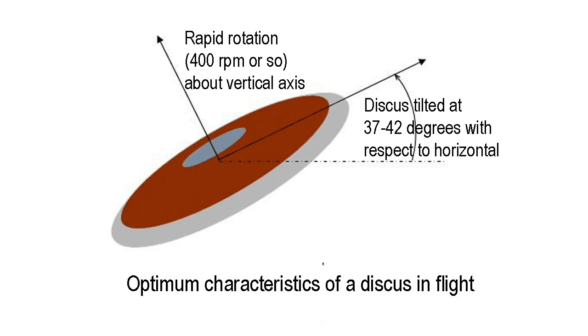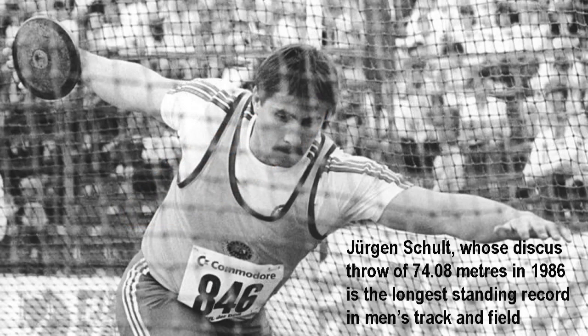To be stable in flight and gain the most possible lift as it flies through the air, the discus has to be tilted on release at an angle of between 37 and 42 degrees. Less than that and it will lose lift; greater and it will stall. Uniquely among track and field events, the discus throw benefits from a headwind. The spinning disc actually travels further on a moderately windy day when thrown into the wind, because although its forward velocity is slightly reduced, this is more than offset by the additional lift and consequent hang time afforded by the faster onward rush of air.